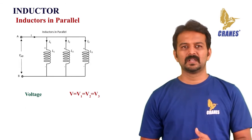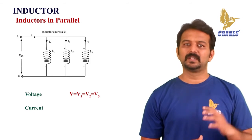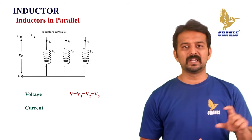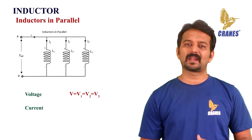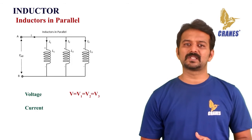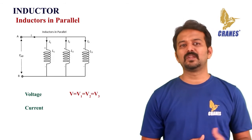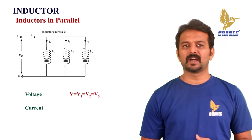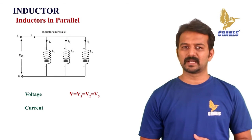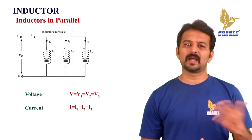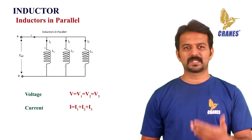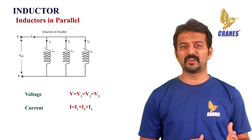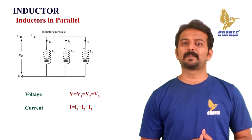For the current: the total amount of current entering a parallel inductive network is the sum of all the individual currents flowing in all the parallel branches. The inductance value of each branch determines the current that flows through it. If I1, I2, and I3 are the currents through L1, L2, and L3 respectively, then the total current is I = I1 + I2 + I3.